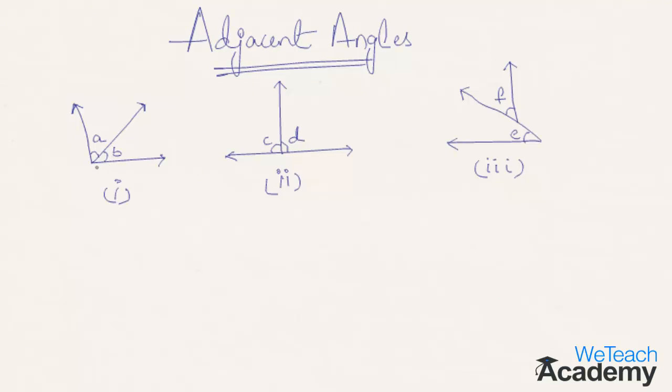Here in the first example we can see that angle A and angle B are adjacent angles since they have a common vertex that is here, and a common arm that is this one. Hence, these are adjacent angles.